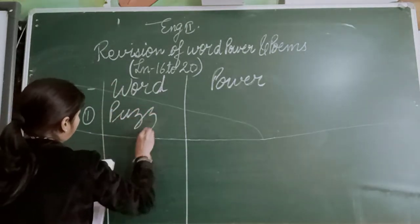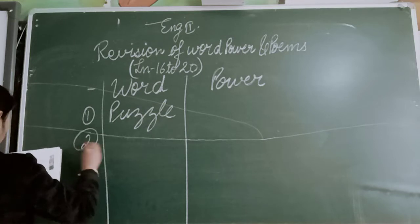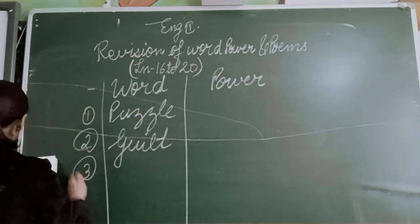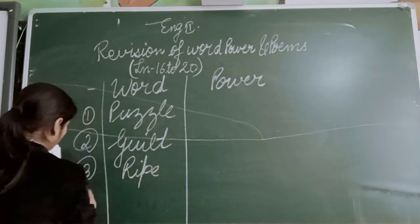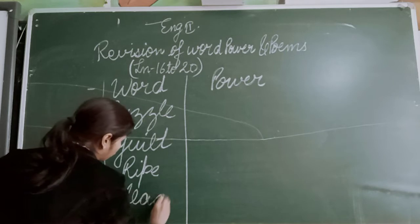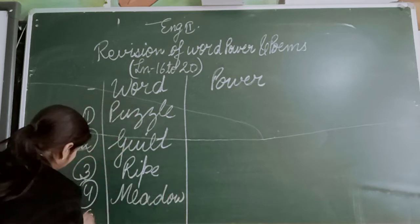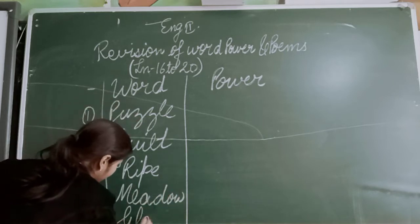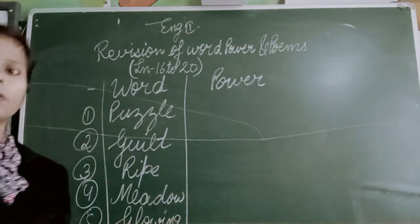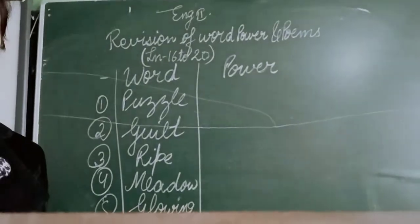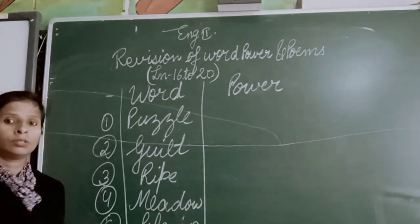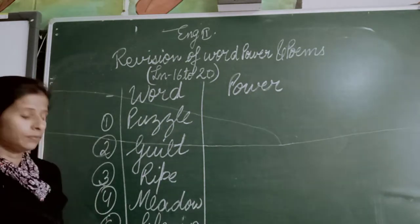First one is puzzle. Second one is guilt — G-U-I-L-T, guilt. Third one is widow. Fourth one is middle. Fifth one is glowing. Write it, after that I will give you another one.